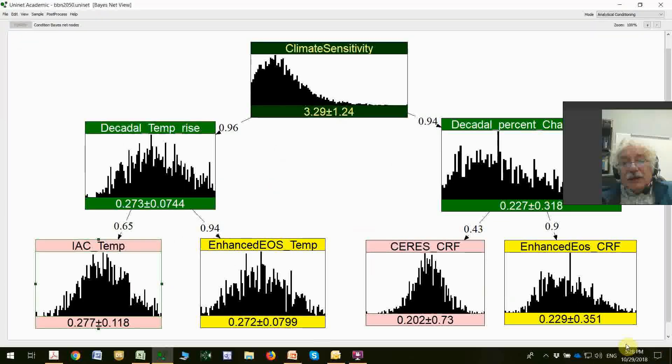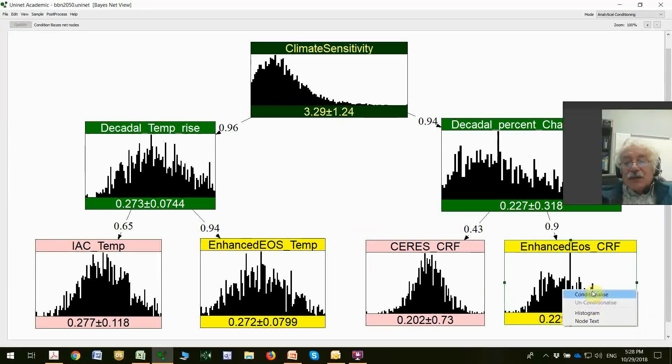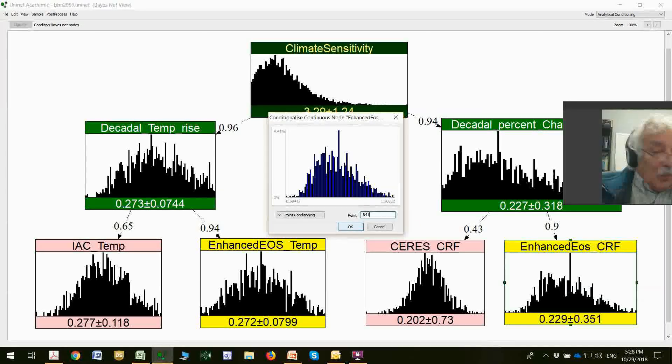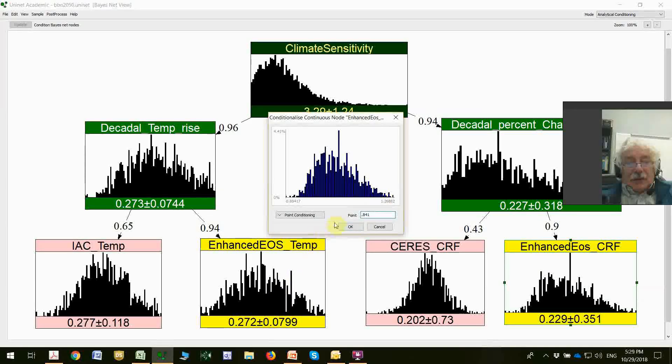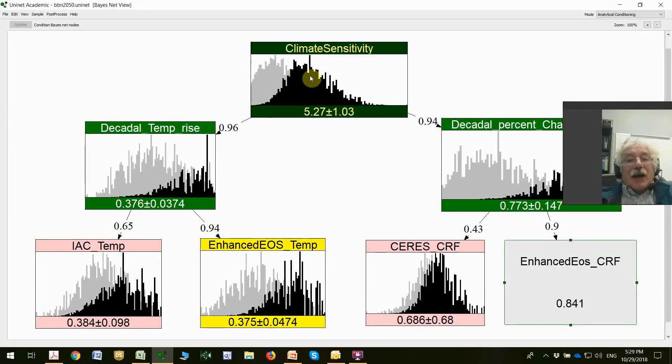I want to illustrate features about anomalies with concordant measurements by conditionalizing our enhanced system. Here, I'm going to suppose that the CRF guys have measured the value 0.841. That's a fairly high value. When we push this through the system, we will find that the expected value of climate sensitivity is 5.27, quite a bit higher.